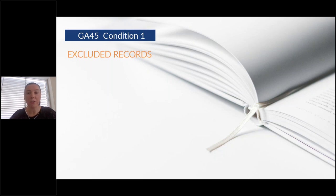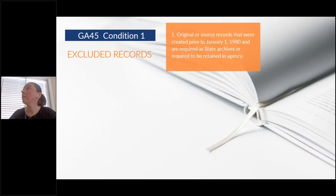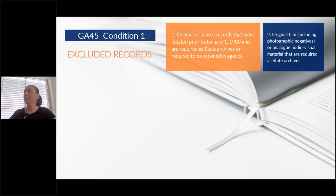A common approach to retrospective projects involving a mix of pre-1980 state archives and records otherwise eligible for destruction is to separate the physical records — either during project preparation or during the QA stage — so that records which cannot be destroyed are set aside for transfer.